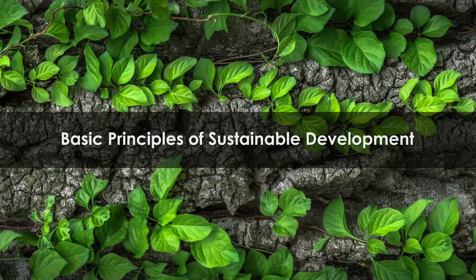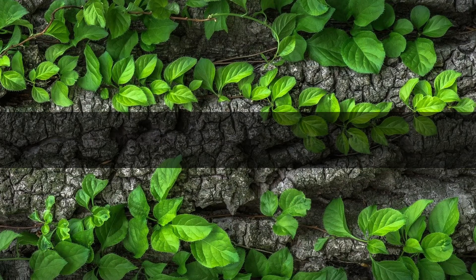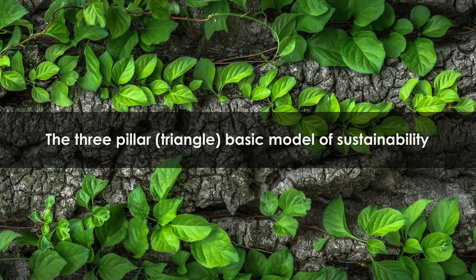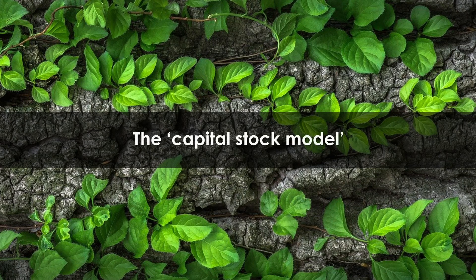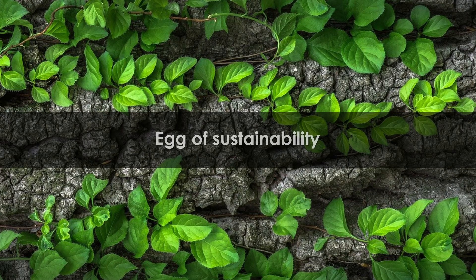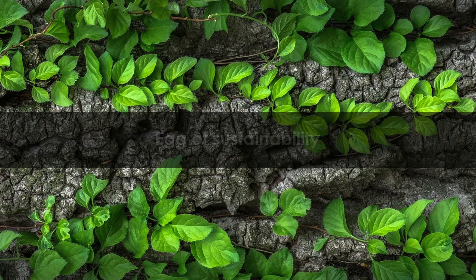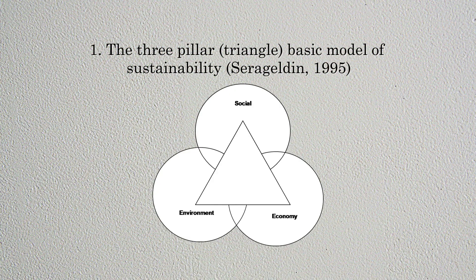What are the basic principles of sustainable development? There are a number of principles proposed by different authors and organizations. We will look at the most important and relevant ones for this course. These include: the three-pillar triangle basic model of sustainability; cultural diversity as a central pillar of sustainable development; the capital stock model; and the Egg of Sustainability as a basic principle of sustainable development.